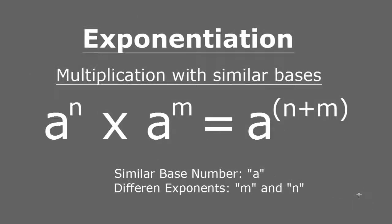Here we see it in more detail. They have the same base number, the letter a, and different exponents represented by n and m. So a to the power of n multiplied by a to the power of m just equals a with the new exponent that is the sum of the exponents of the other two — basically a raised to the power of n plus m.